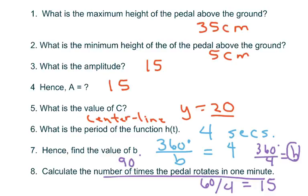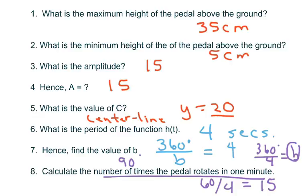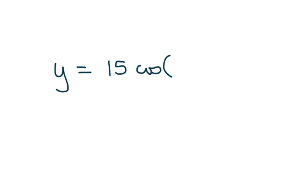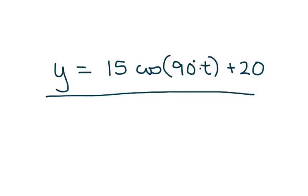If I were to write this, this would be y equals, my amplitude is 15, 15 cos b, my b was 90 degrees, so 90 times t plus, and it's 90 degrees, plus 20. So that's my equation.